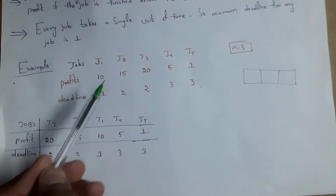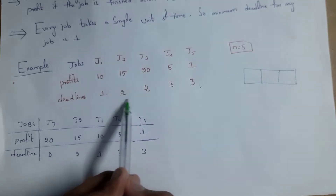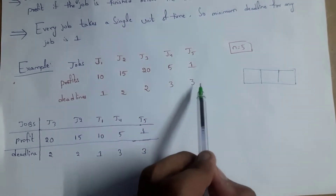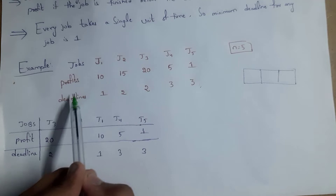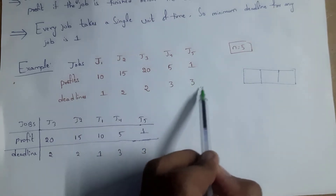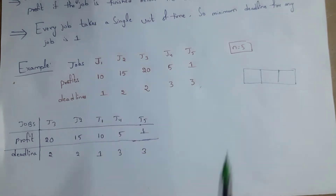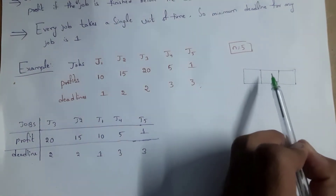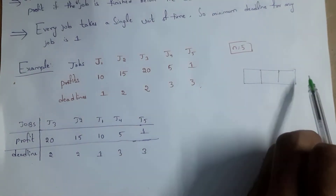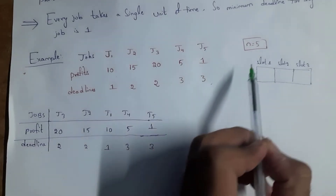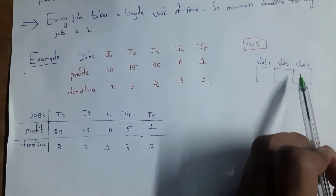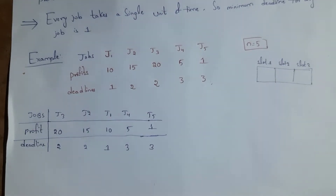For J1 the deadline is 1, for J2 and J3 the deadline is 2, and for J4 and J5 the deadline is 3. Among these, the highest number is 3, so the maximum deadline is 3. We therefore take 3 slots — Slot 1, Slot 2, and Slot 3 — each representing 1 hour, for a total of 3 hours.